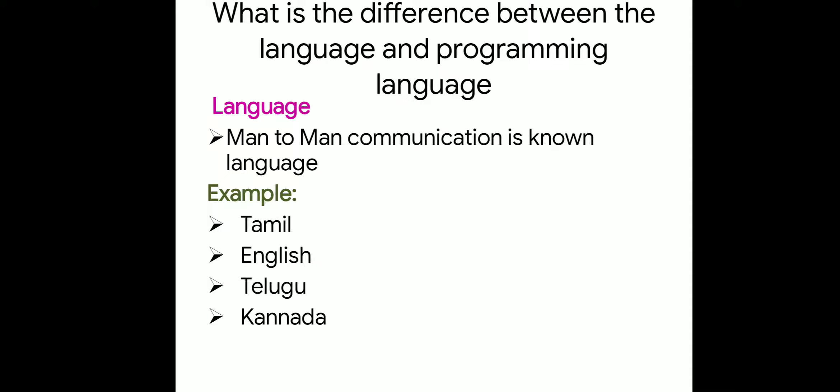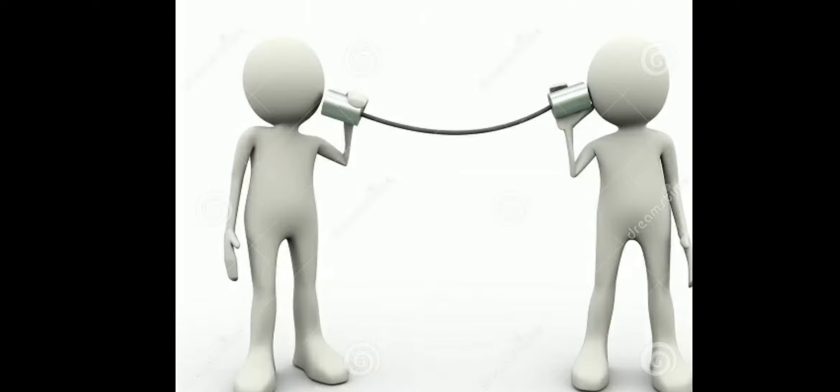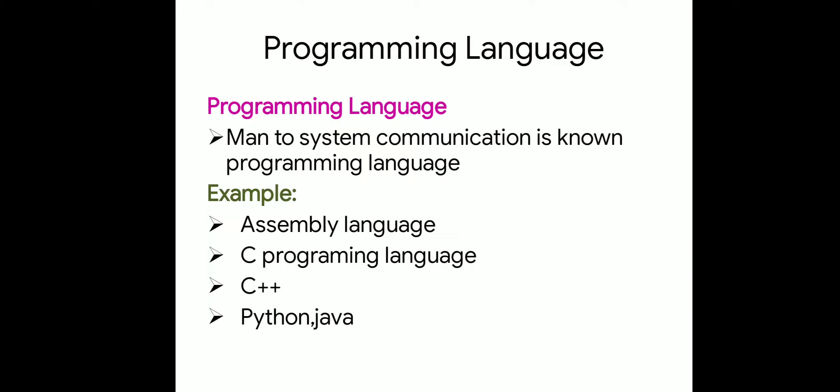An important part of this introduction is understanding the difference between a language and a programming language. A language is man-to-man communication — one person conveying a message or information to another. Examples include Tamil, English, Telugu, and Kannada. A programming language is man-to-system communication.